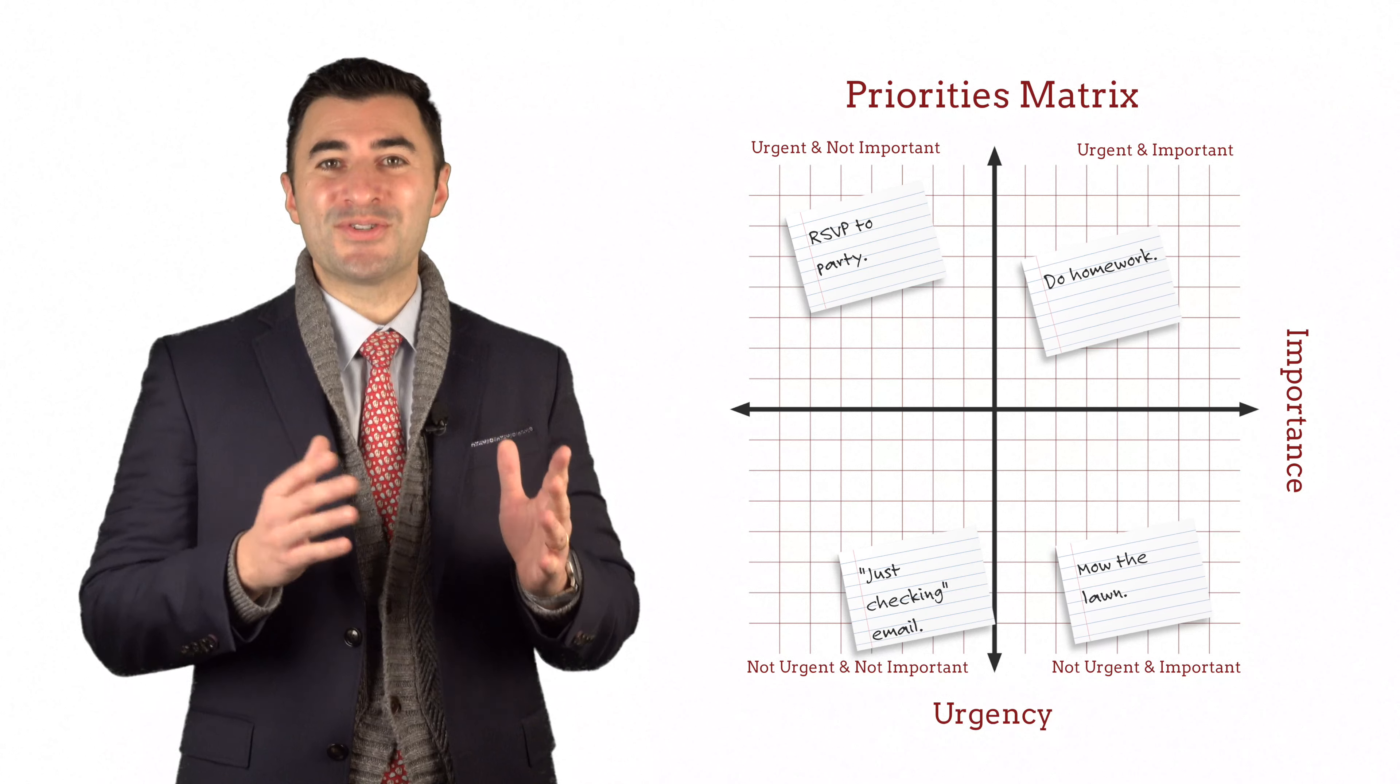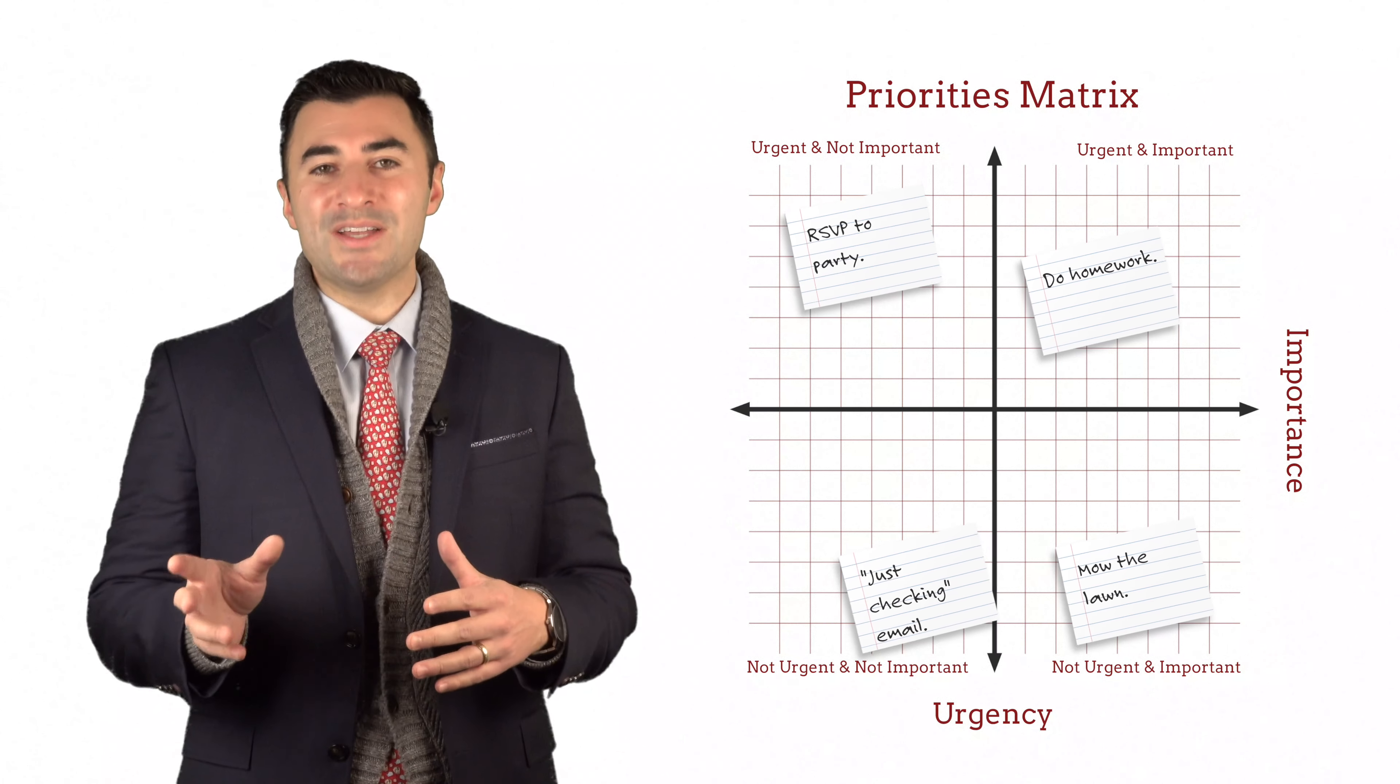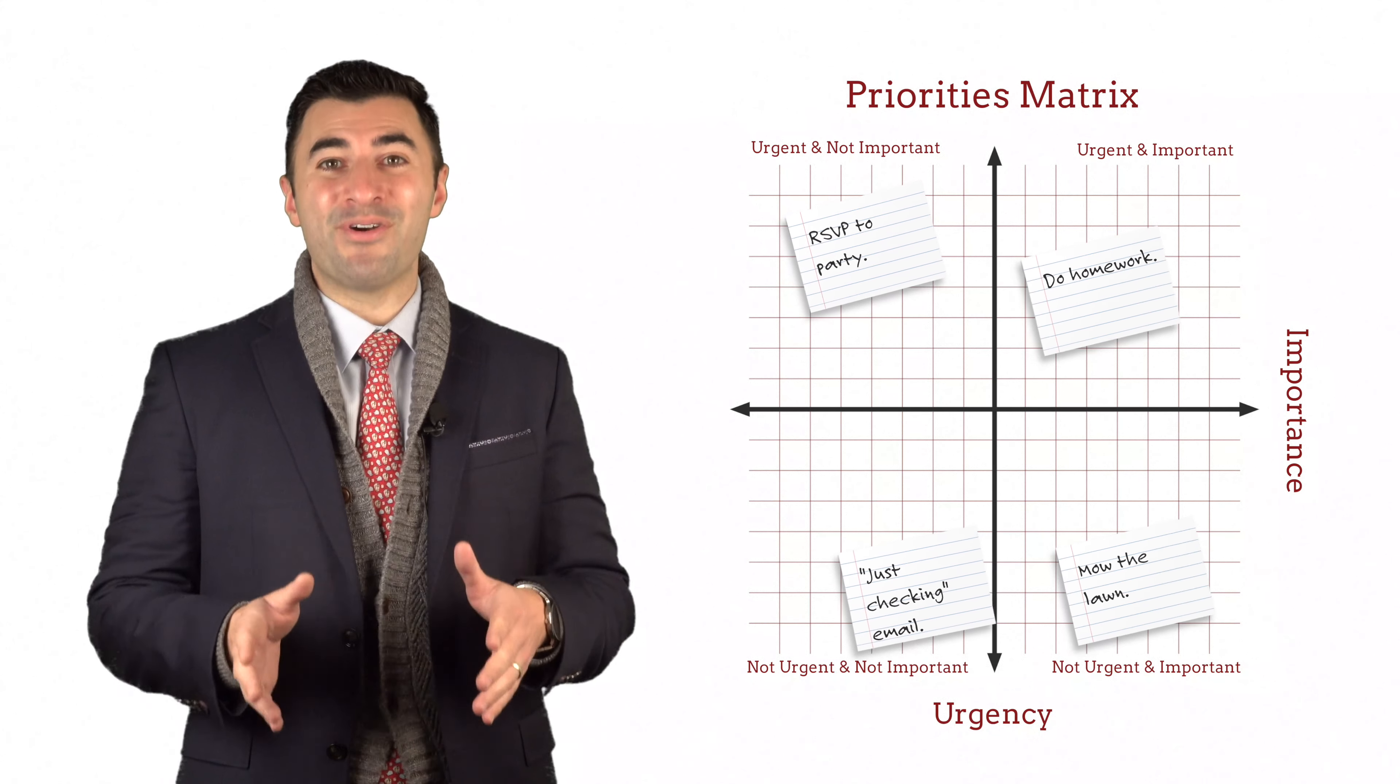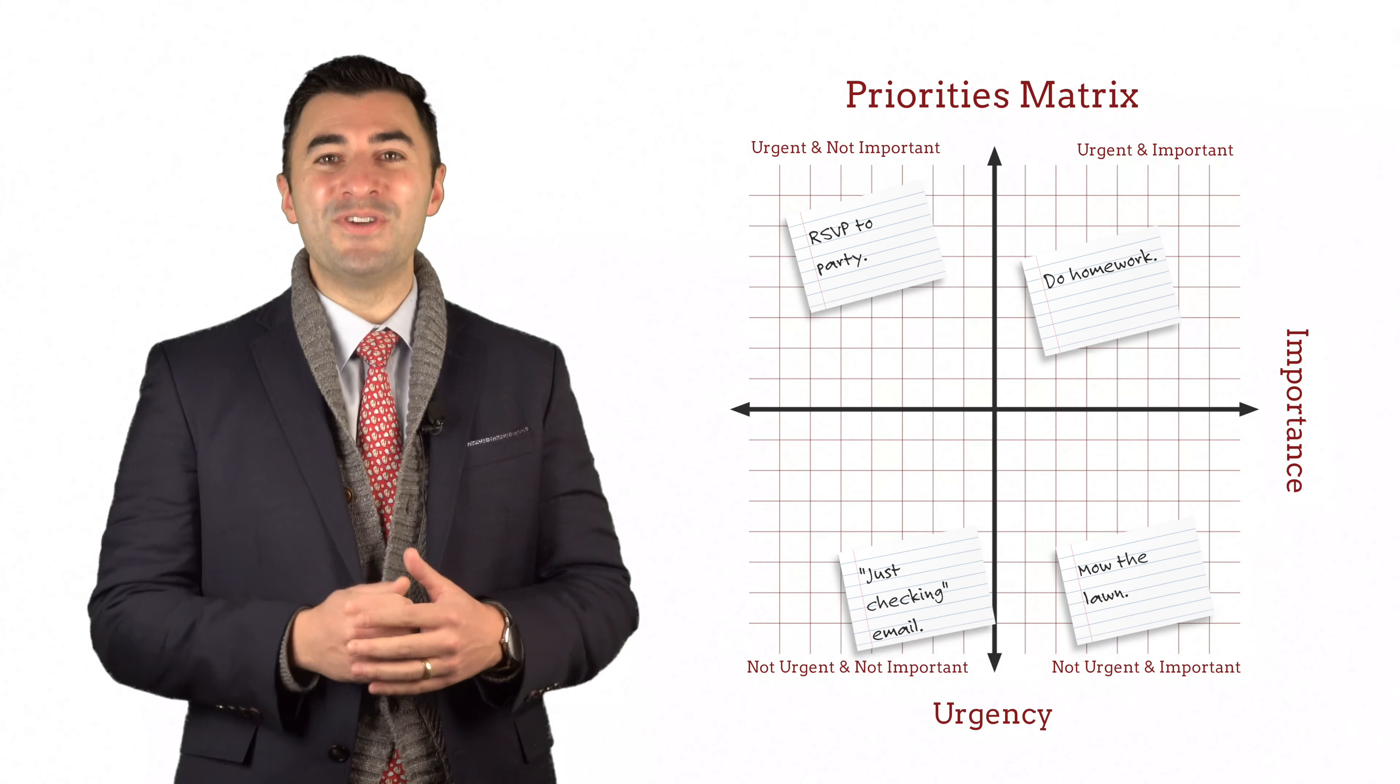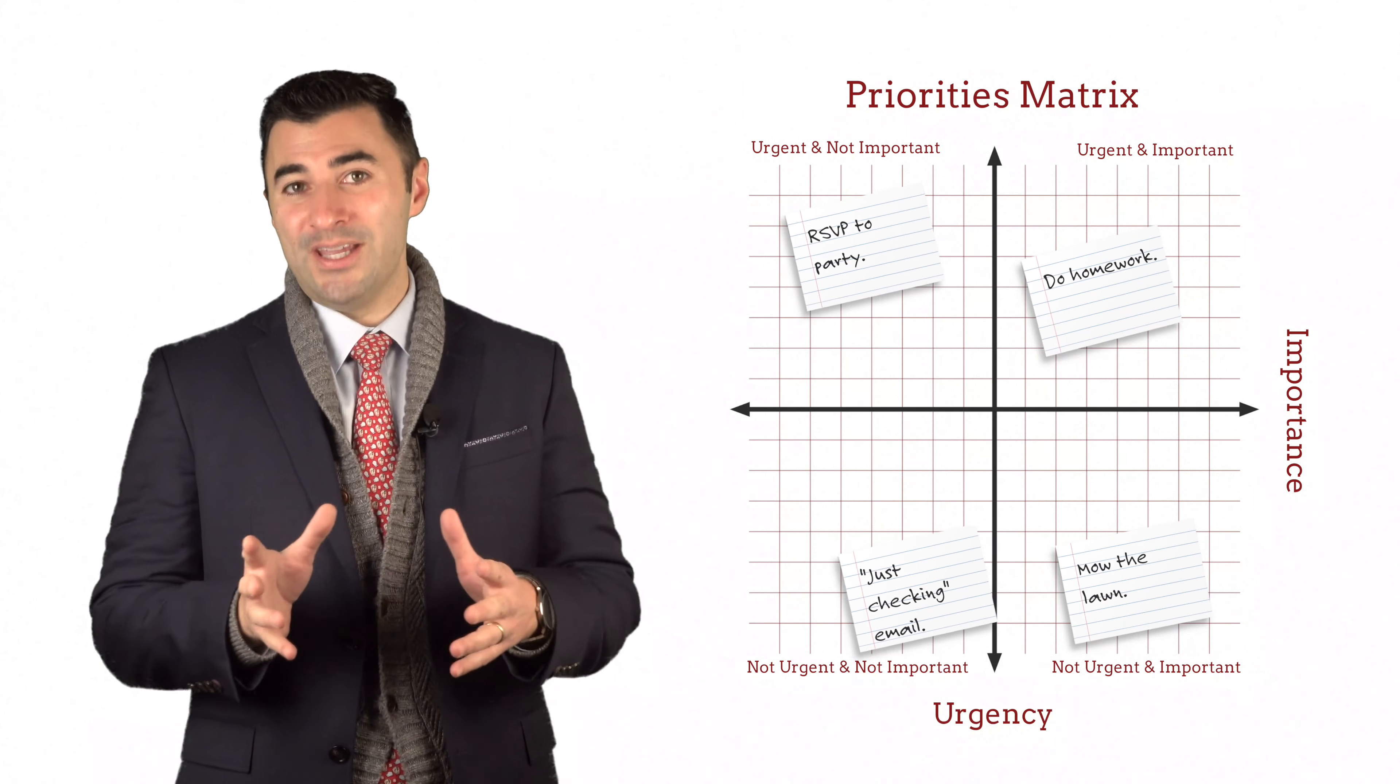So once your son or mentee has created his priorities matrix, or at least set up a quadrant, have him go through his master list and categorize each task into one of those four quadrants. This is going to force him to prioritize his life, to take command. It's going to serve as a visual reminder for him for what's most important and what needs to be done now and what can wait.